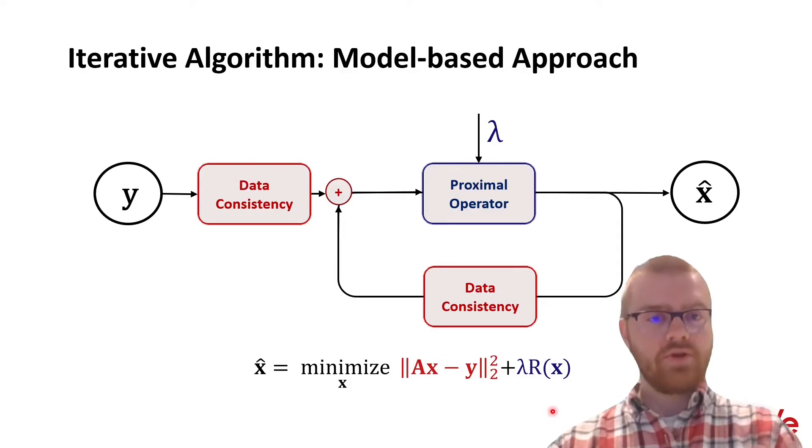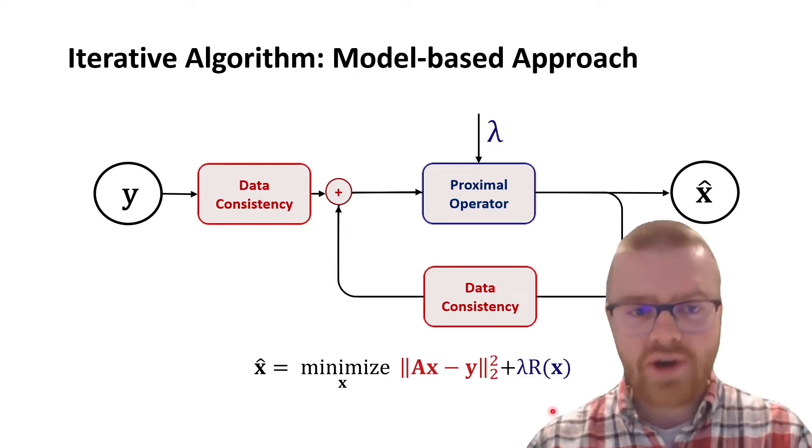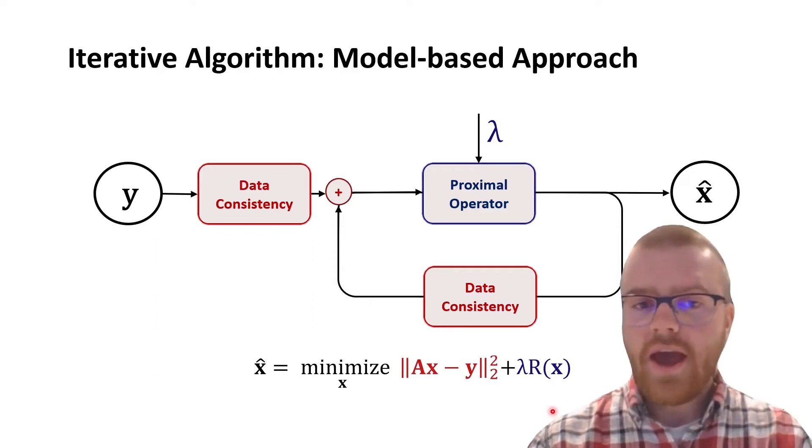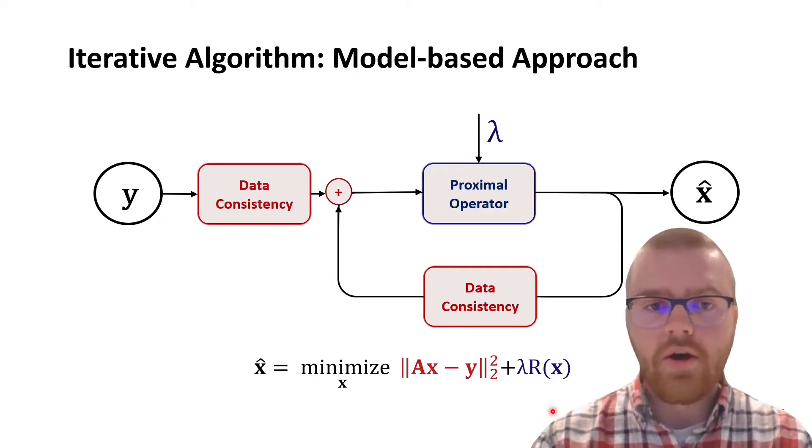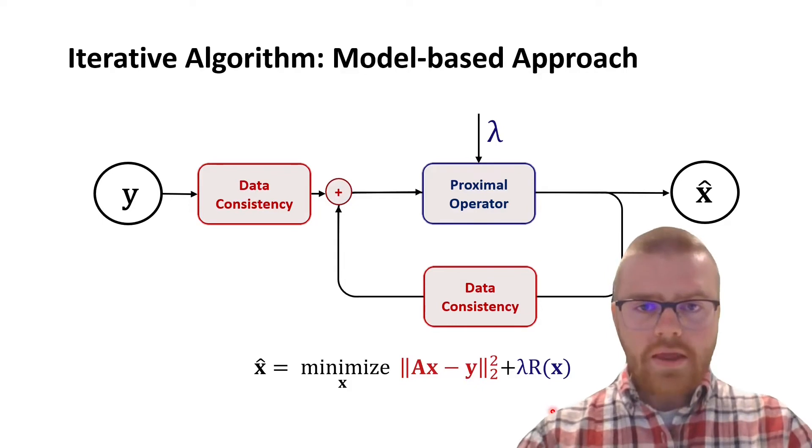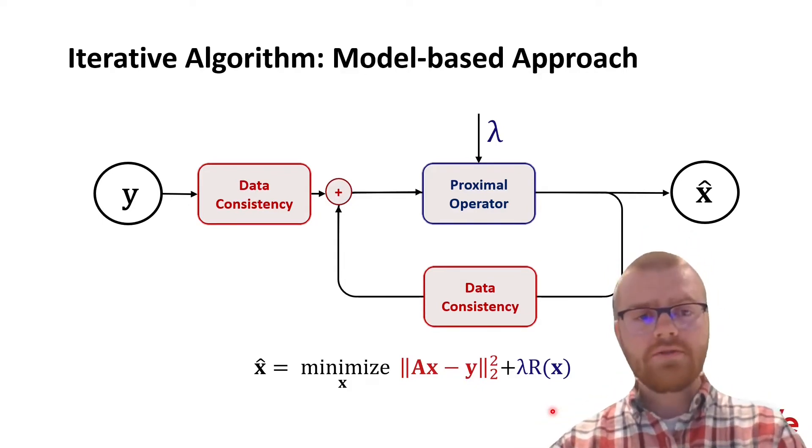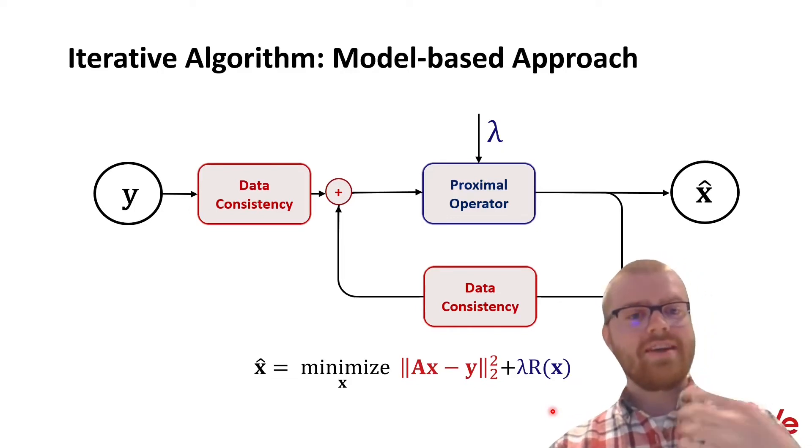And also we have some proximal operator, basically a prior on the structure of X. This could, for example, be a sparsity prior in, for example, Fourier domain. Now, the problem with these iterative algorithms is that we have to handcraft this prior and that it can take many iterations to actually get a good result.